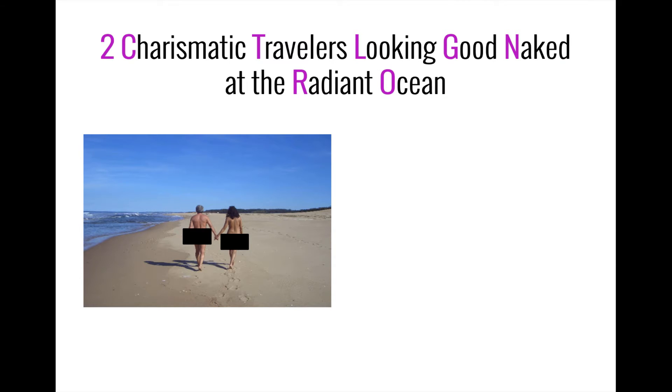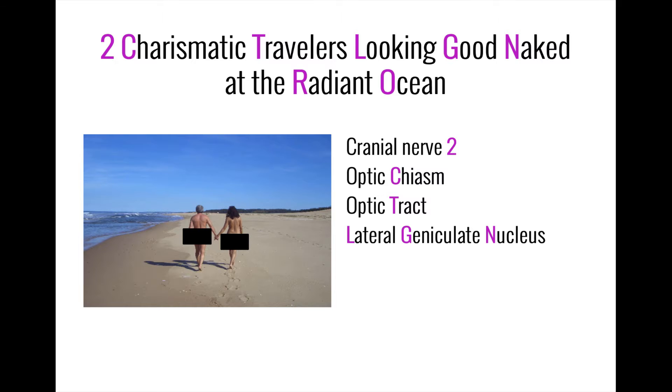To remember this pathway, think about the image of two charismatic travelers looking good naked at the radiant ocean. This should remind you of the optic nerve, the optic chiasm, the optic tract, the lateral geniculate nucleus of the thalamus, the optic radiations, and finally, the visual cortex in the occipital lobe.